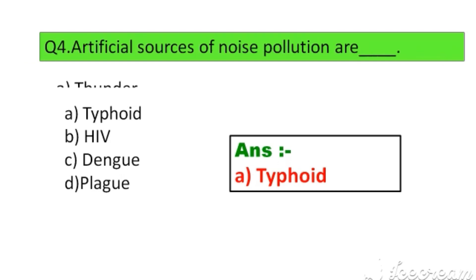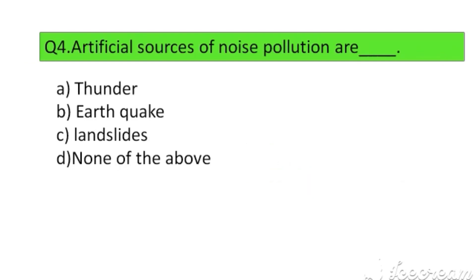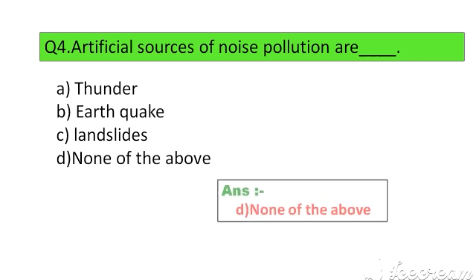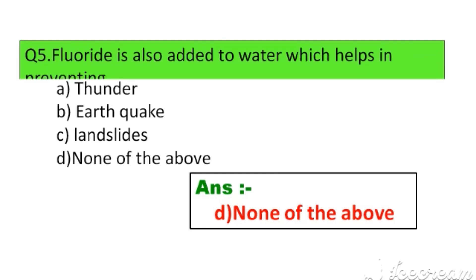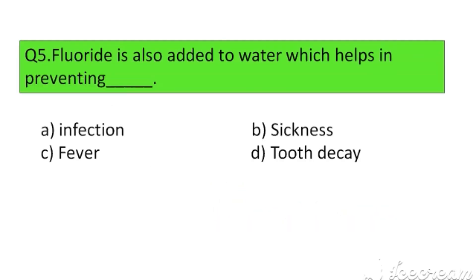Question number 4. Artificial sources of noise pollution are: Option A. Thunder, B. Earthquake, C. Landslides, D. None of the above. The right answer is Option D: None of the above.